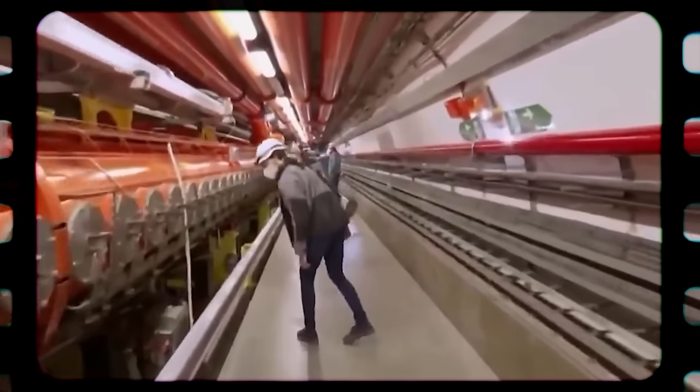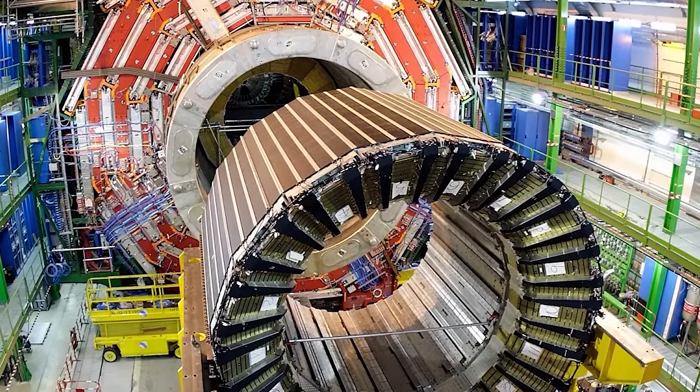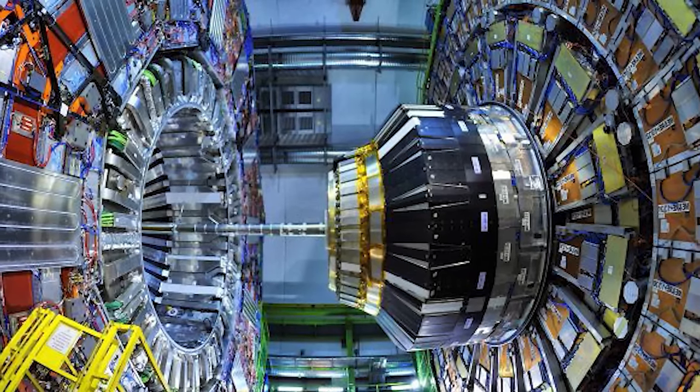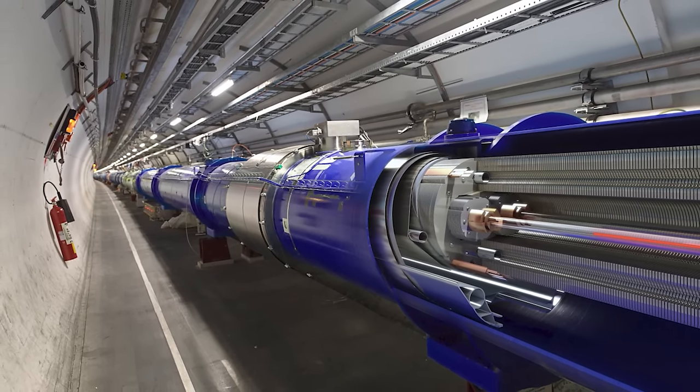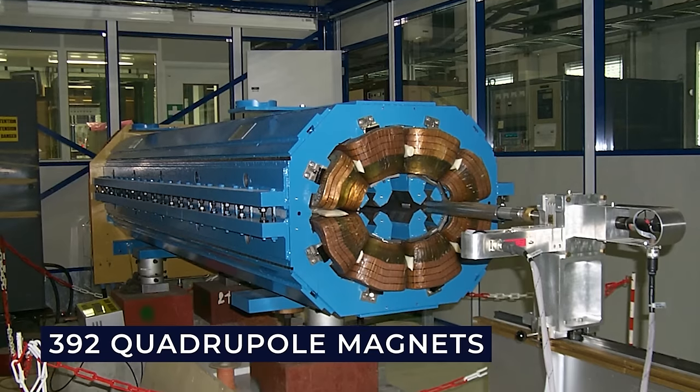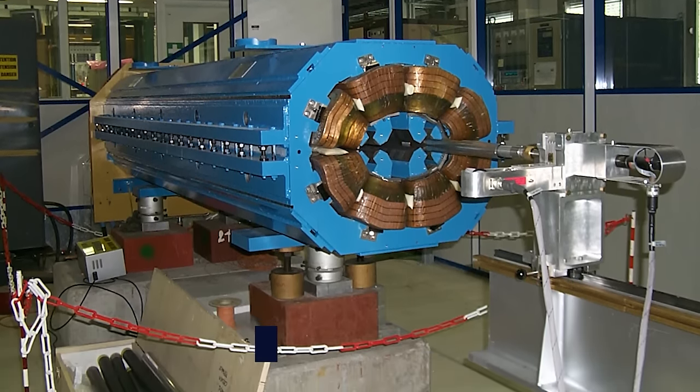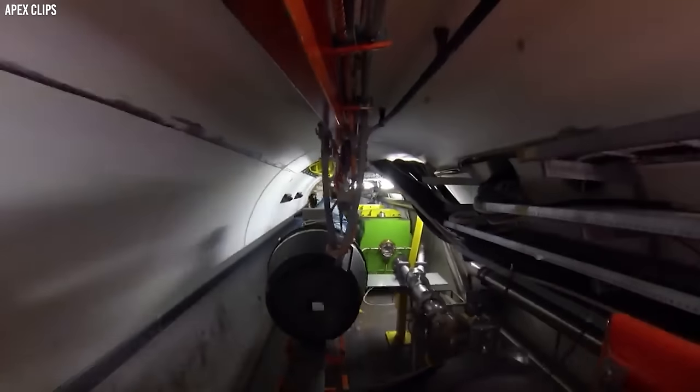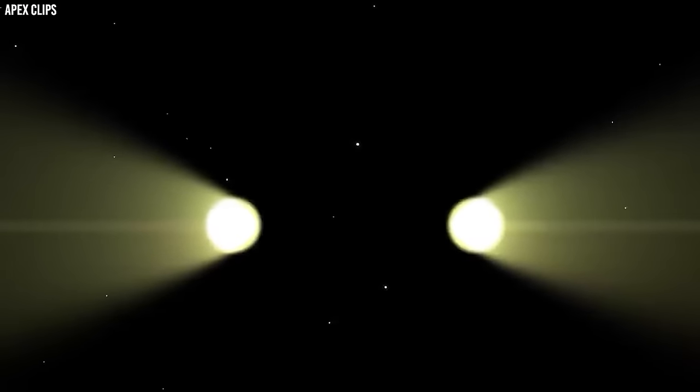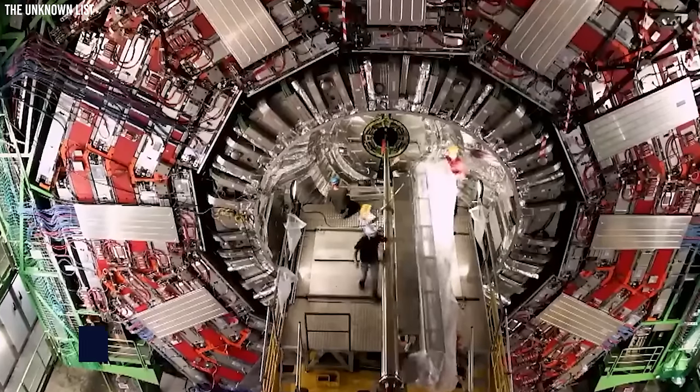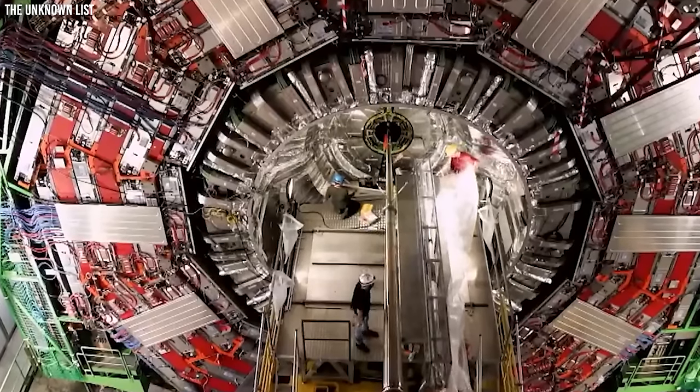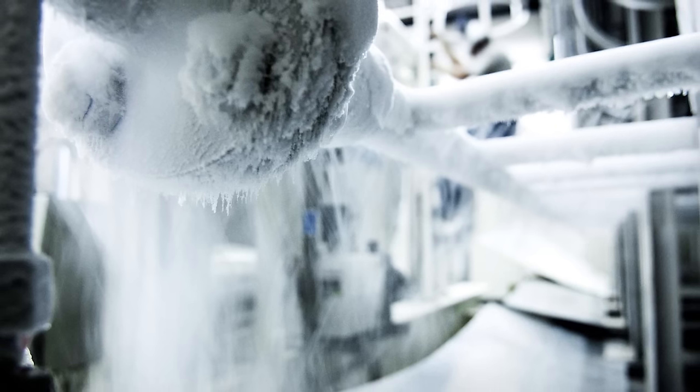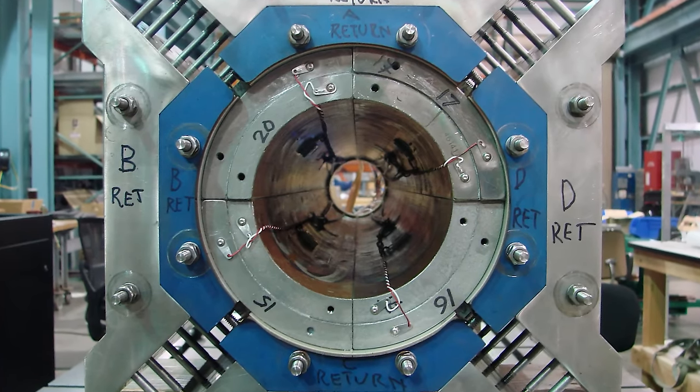The Collider tunnel features two adjacent parallel beam pipes with four intersection points around the ring. It is at these intersection points that particle collisions take place. The LHC also features about 1,230 dipole magnets and 392 quadrupole magnets. These magnets help keep the charged particle beams focused and on track for the collision. In total, over 10,000 superconducting magnets were installed in the LHC with about 96 tons of superfluid helium installed to keep the magnets from overheating.